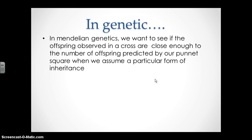In genetics, we're trying to see if the results we observe — the data, the number of offspring — are close enough to the ratios predicted by our Punnett square to assume that the form of inheritance we think it is, is correct.